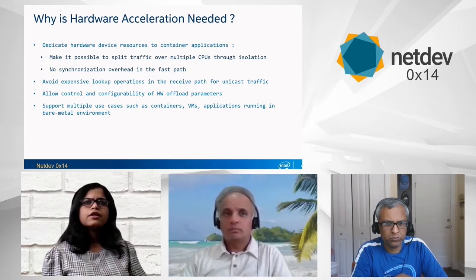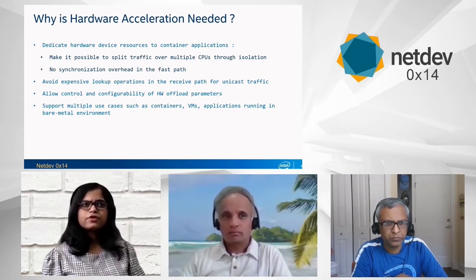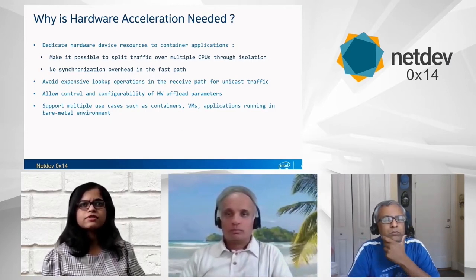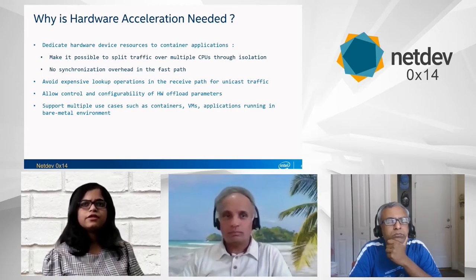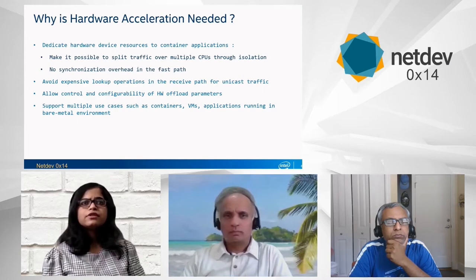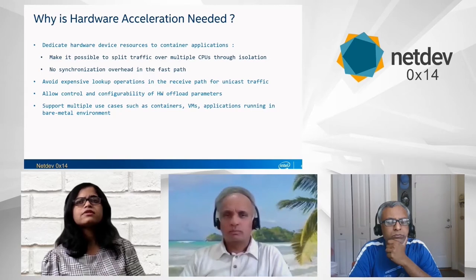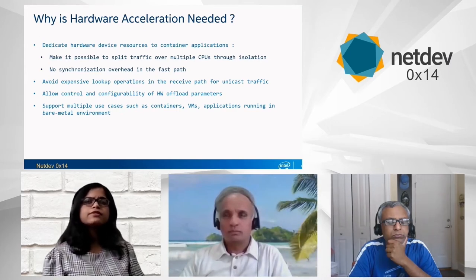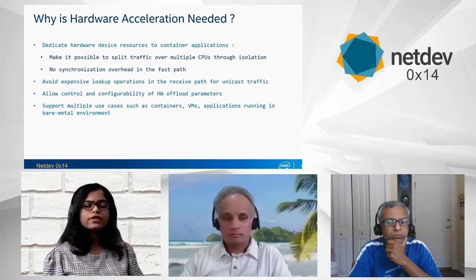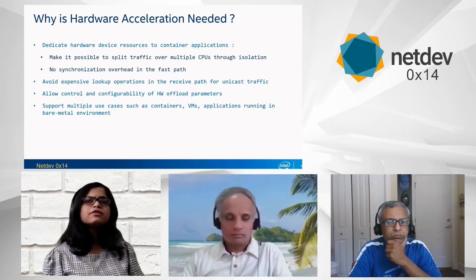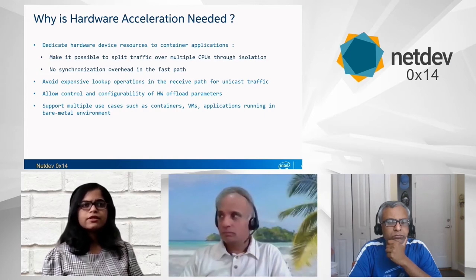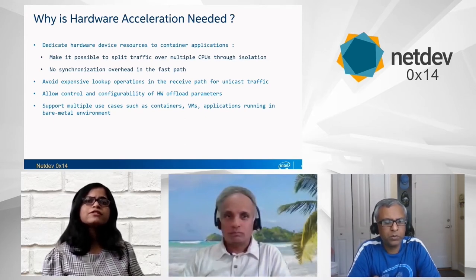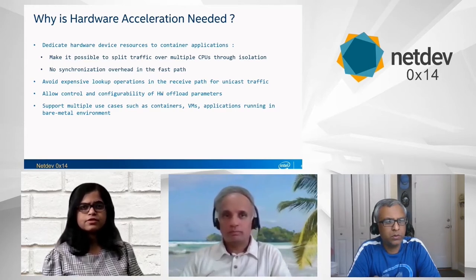Another aspect is that for MAC VLAN and IP VLAN receive path unicast traffic, there are expensive lookup operations in the software stack — primarily hash list traversal to find the right target container device. With acceleration, we can avoid this software lookup, and the driver itself can select the target container device. Acceleration also provides improved control and configurability of various features, and spans multiple use cases like containers, VMs, and bare metal environments.